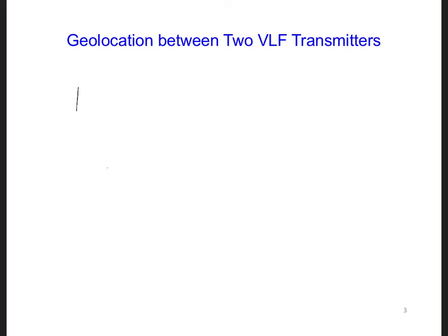Let's consider two transmitters for simplicity. Here's transmitter number one and here's transmitter number two. Both transmitters are synchronized, perhaps using atomic clocks, so they transmit at exactly the same time. They're going to transmit at 10 kilohertz, and the wavelength at 10 kilohertz in air is 30 kilometers. Let's say these two stations are exactly one wavelength apart — so 30 kilometers apart.